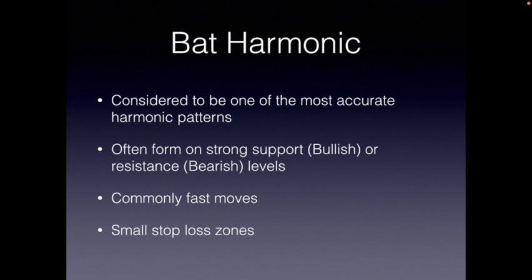We're looking for these patterns to form either over strong support for a bullish harmonic, or resistance for a bearish one. If not, we want as many confluence factors as possible — the more the better. These are also commonly quicker moves than other harmonics, and they are brilliant for new traders because they have very tight stop losses. In terms of harmonics, it's the tightest. Minimized risk — always good when you're beginning. Protect that capital.